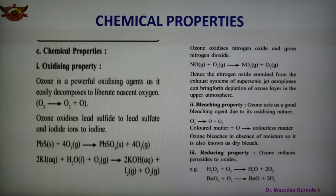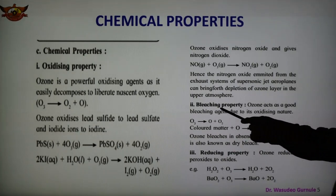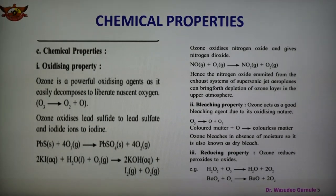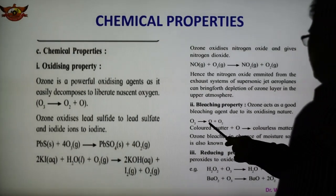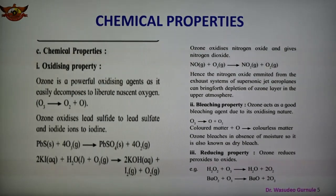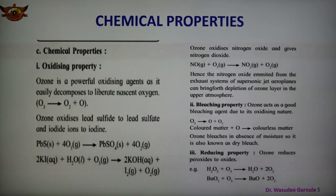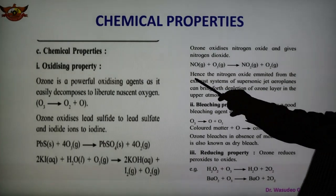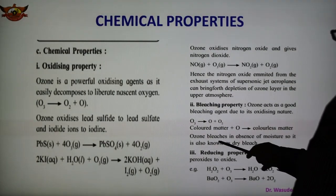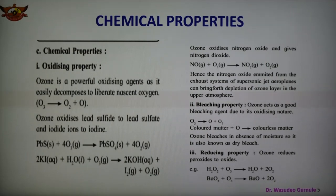Another chemical property of ozone is its bleaching property — ozone acts as a good bleaching agent. Ozone decomposes forming nascent oxygen and oxygen. The nascent oxygen reacts with colored matter, converting it to colorless matter. Ozone bleaches in the absence of moisture, so it is also known as a dry bleach, showing oxidizing property.